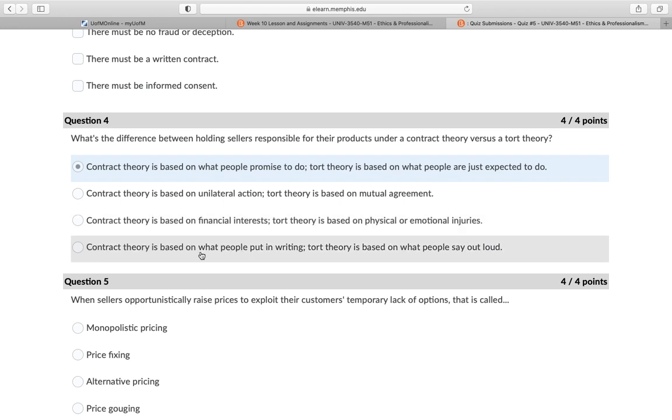The fourth option says contract theory is based on what people put in writing, and tort theory is based on what people say out loud. This is not necessarily true because not all contracts have to be put in writing. Yes, certain contracts ought to be in writing, but you don't necessarily have to enter into a contract in writing. You can make a contract just through speaking it out loud.